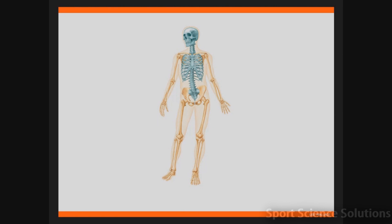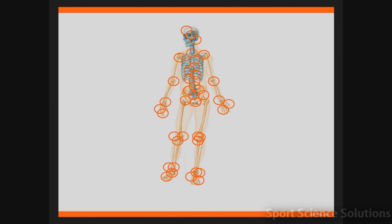Now where each of these bones meet we have what's called a joint or articulation. Now if I ask you to think of a joint, most of you straight away have thought of something like a knee, maybe an elbow or a shoulder. There's not many of you that would have actually thought about the joints that occur in something like the skull. So there's many, many joints found throughout all the body. What we have to learn today is how do we classify each of these joints.